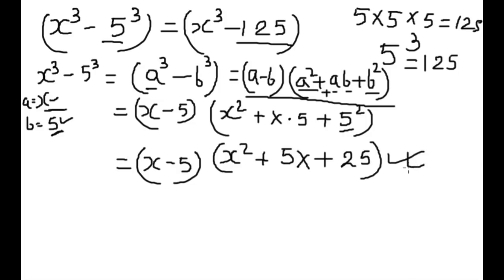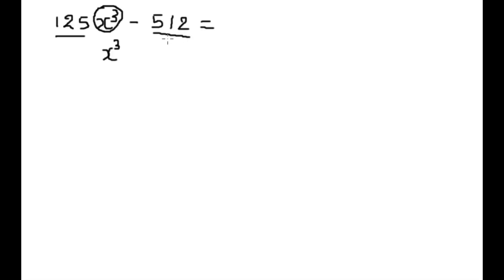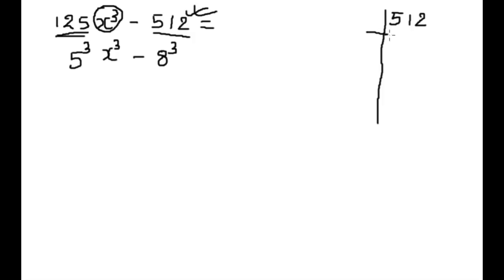That is the process. Let's take one more example. The next example is 125x cube minus 512. Here, since we have x cube, we can take the idea that these numbers are also cubes of some number. We know 125 is cube of 5, so we can write this as 5 cube. But many students don't know that 512 is cube of 8.